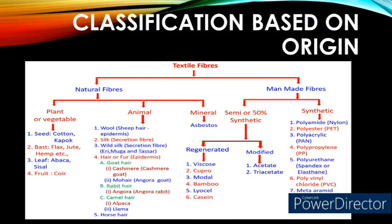Number two — mohair, extracted from Angora goat. Number three — rabbit hair: example, Angora, extracted from the Angora rabbit. Number four — camel hair: examples, alpaca and llama. The final animal fiber is extracted from horse hair. Mineral fiber. The naturally available mineral fiber is asbestos.